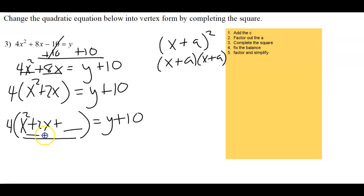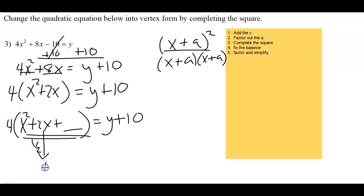If this factors into two identical things — x plus a, x plus a — then it's written as (x + a) squared. To find the number to add, take half of the middle coefficient, which is 1, and then square it: 1 squared equals 1. So we add 1 inside. That gives us our perfect square trinomial.